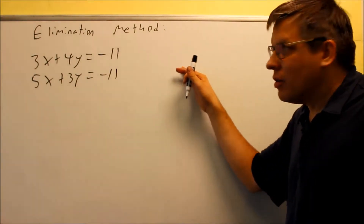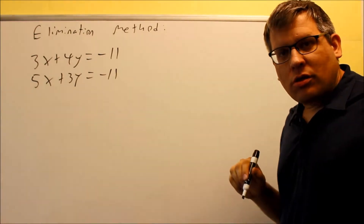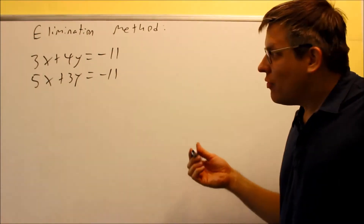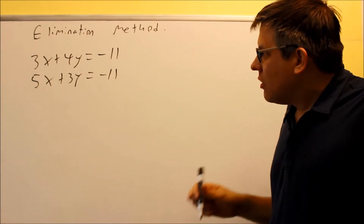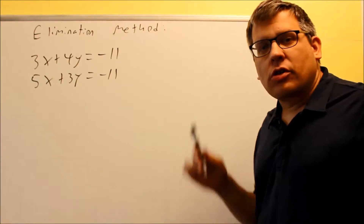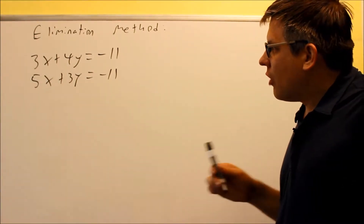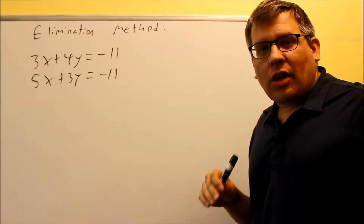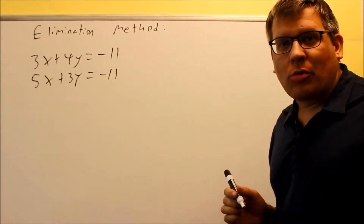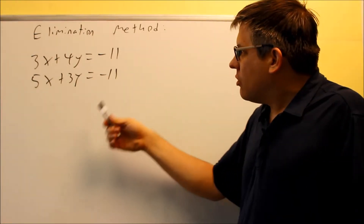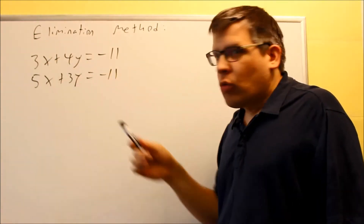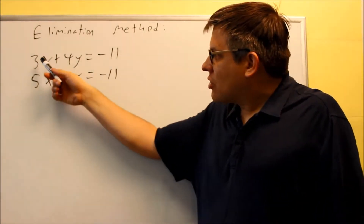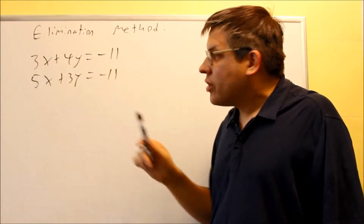Now we're going to solve using the elimination method. With substitution, you need a variable already isolated, and that method works best in that case. Here it would be difficult to solve for either x or y without getting fractions involved. Elimination involves multiplying one or possibly both equations by a number all the way through, then adding the equations together so that one variable drops out. We'll choose to eliminate either the x's or the y's — it doesn't really matter which.